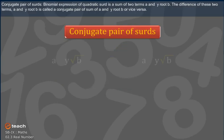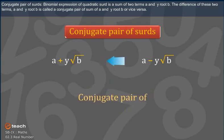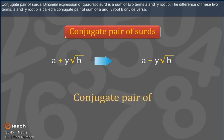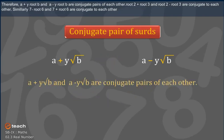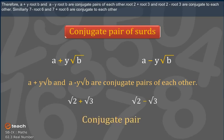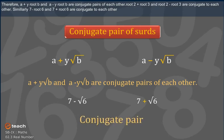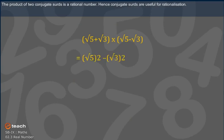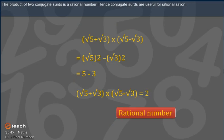Conjugate pair of Surds: a binomial expression of a quadratic surd is a sum of two terms A and Y root B. The difference of these two terms, A minus Y root B, is called the conjugate of A plus Y root B, and vice versa. Therefore, A plus Y root B and A minus Y root B are conjugate pairs of each other. For example, root 2 plus root 3 and root 2 minus root 3 are conjugate to each other. Similarly, 7 minus root 6 and 7 plus root 6 are conjugate to each other. The product of two conjugate surds is a rational number. Hence, conjugate surds are useful for rationalization.